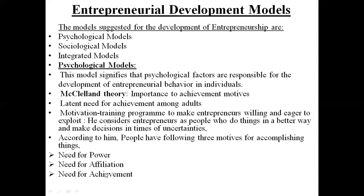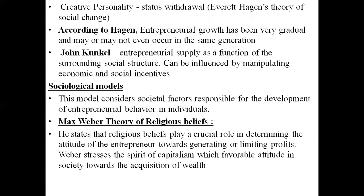There is one more thinker, Everett Hagan, who thinks that entrepreneurial growth is not a sudden activity — it won't take place in a single stretch. You should gradually build up entrepreneurial activity to become a big successful entrepreneur. He states it may or may not occur in the same generation; it may take one more generation, considering a span of about 10 years, for a normal person to become a big successful entrepreneur.